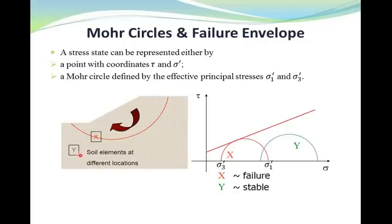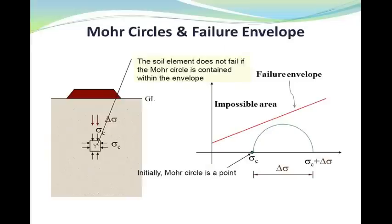But in case of element Y, the Mohr circle, as you can see here, will not touch the envelope and the element remains safe. In this element, element Y, with applying the delta sigma stress after the hydrostatic stress condition, Mohr circle becomes larger. And with this stress condition that we have in here, the soil element does not fail. Why? Because the Mohr circle is located within the failure envelope.